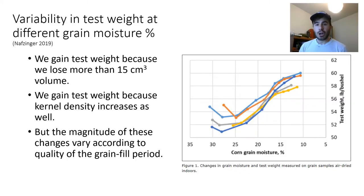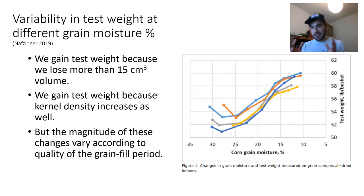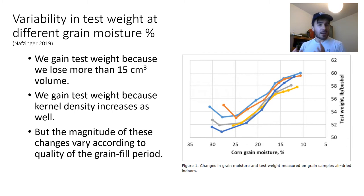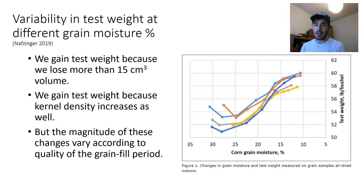In general, you gain more space when you dry down kernels than you would expect just from calculating the volume of moisture lost alone — again, because of the change in kernel shape and slipperiness. You also gain test weight because kernel density increases as kernel moisture concentration goes down. But the magnitude of these changes varies according to the quality of the grain fill period.